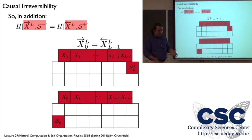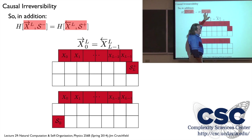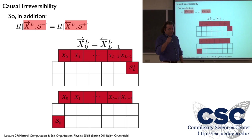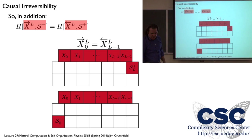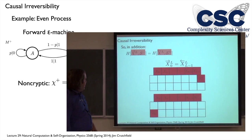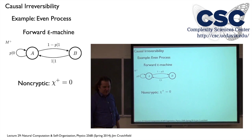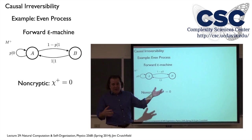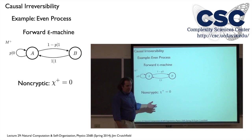Since the reverse machine is the same as the forward, it's also not cryptic — excess entropy and statistical complexities are the same. It's microscopically reversible because the machines are the same, therefore the processes are exactly the same. If I see a word in forward time and reverse it, it'll appear under the forward distribution with equal probability. The even process is causally reversible and completely symmetric in time.